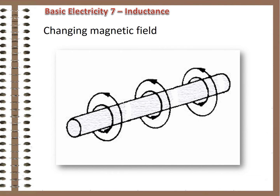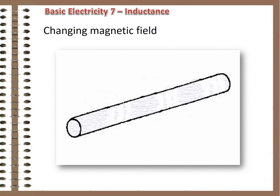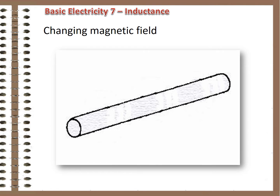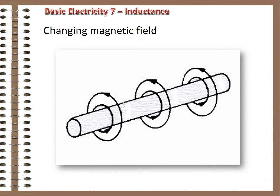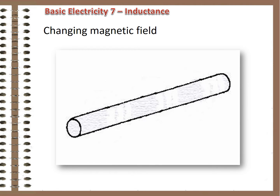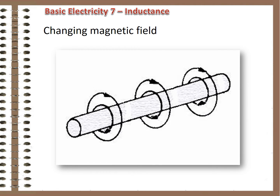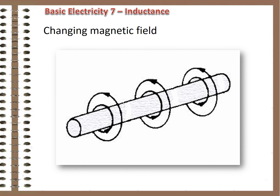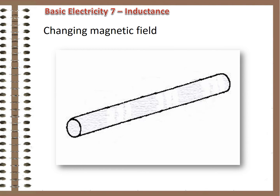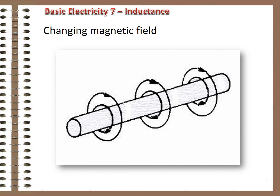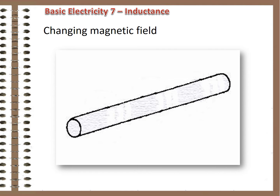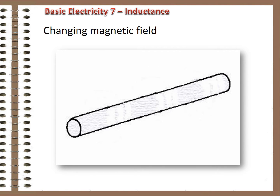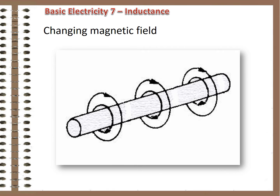In an alternating current circuit, like any other circuit, the current that flows in the conductor also creates a magnetic field around it. And because the current is changing directions constantly, so is the magnetic field. This is both a source of great benefit, and a source of great complication and potential danger. Let's first look at the benefits.